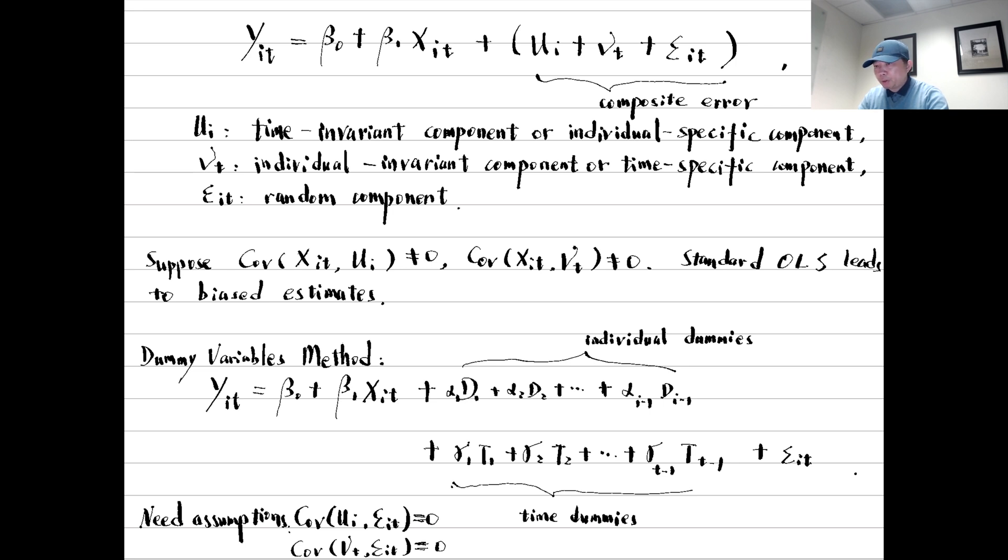The random component represents the other unobserved factors that are different across individuals and change over time. The purpose of dividing the panel data error term into three parts is that we allow the time-invariant component and the individual-invariant component of the error term to be correlated with the explanatory variables, and we can still obtain consistent estimates using panel data methods.